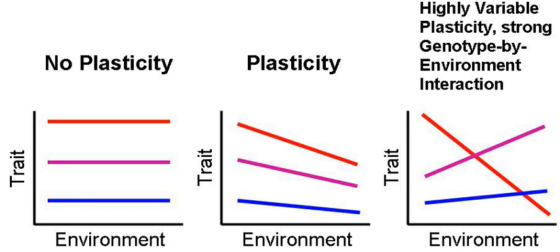The red-eyed tree frog, Agalychnis callidryas, is an arboreal frog that resides in the tropics of Central America. Unlike many frogs, the red-eyed tree frog has arboreal eggs which are laid on leaves hanging over ponds or large puddles and, upon hatching, the tadpoles fall into the water below. One of the most common predators encountered by these arboreal eggs is the cat-eyed snake, Leptodeira septentrionalis. In order to escape predation, the red-eyed tree frogs have developed a form of adaptive plasticity. The clutch is able to hatch prematurely and survive outside of the egg five days after oviposition when faced with an immediate threat of predation. The egg clutches take in important information from vibrations felt around them to determine whether or not they are at risk. In the event of a snake attack, the clutch identifies the threat by the vibrations given off, which stimulates hatching almost instantaneously.